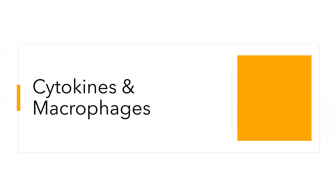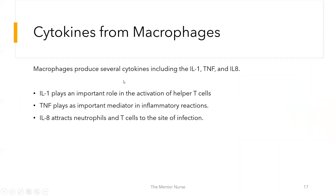Macrophages produce three main cytokines: interleukin-1 (IL-1), tumor necrosis factor (TNF), and interleukin-8 (IL-8). IL-1 activates T helper cells, initiating a sequence of events that recruits and activates T cells. TNF plays an important role as a mediator in inflammatory processes. IL-8 attracts other immunological cells — such as neutrophils (granulocytes) and T cells — to the site of infection, so a macrophage encountering a pathogen calls for help rather than handling it alone.